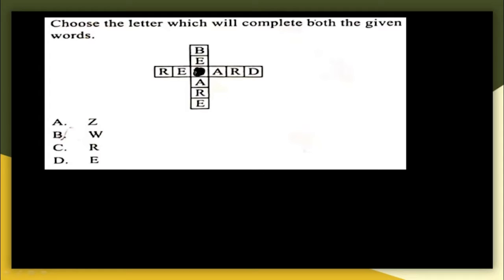Next question: choose the letter that will complete both the given words. The answer is W. Reading horizontally you get the word REWARD, and reading vertically downwards you get BEWARE. The correct answer is option B: W.